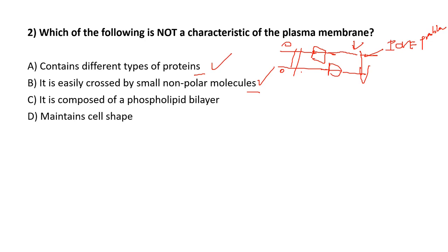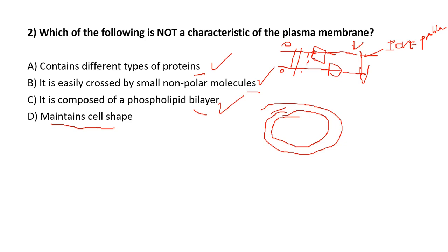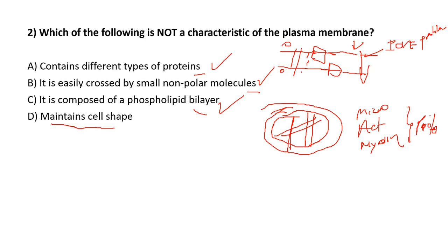Option C — composed of a lipid bilayer — is correct. Option D — maintains the cell shape — is NOT completely true. The cell membrane does not control or maintain cell shape. What controls cell shape is the proteins inside the cell: microtubules, actin, and myosin. So option D is incorrect. The question asks which is NOT a characteristic of the plasma membrane, so the answer is D.